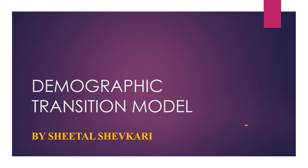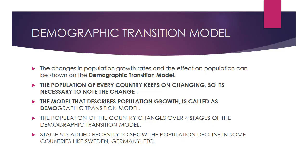Today's topic is the Demographic Transition Model, from the chapter Population. The change in population growth rate and its effect on population can be shown on the demographic transition model. It is totally dependent on birth rate and death rate, and the changes or decline in population growth. The population never remains constant — it always changes, and those changes can be shown with the help of this model.